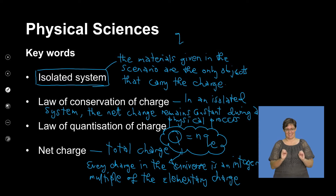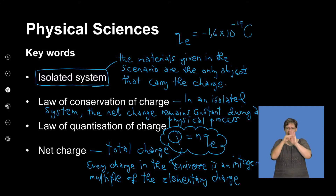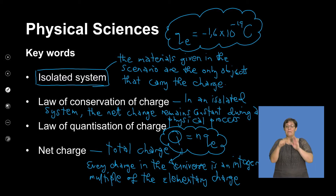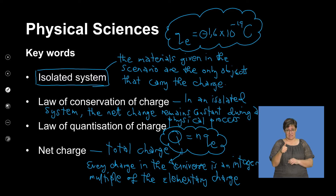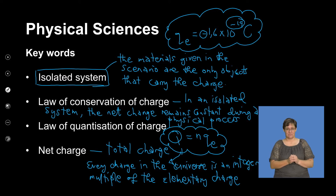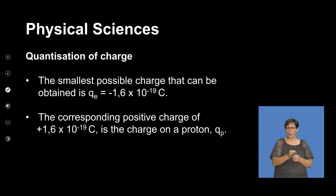QE equals negative 1.6 multiplied by 10 to the exponent negative 19 coulombs. This value is a physical constant — it shall be given to you; you need not memorize it. The first negative goes with 1.6 and represents the nature of the charge, while the other negative goes with the exponent and represents the decimal fraction. You must be able to distinguish between the two.